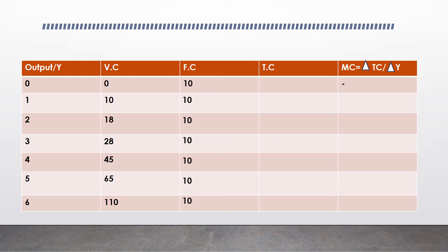To calculate total cost, you use the formula: variable cost plus fixed cost equals total cost. When you are producing nothing, your total cost is 0 plus 10, which is 10. When you produce one output, it's 10 plus 10, which is 20. When you produce the second output, it's 18 plus 10, which is 28. And that's how it continues across the table.